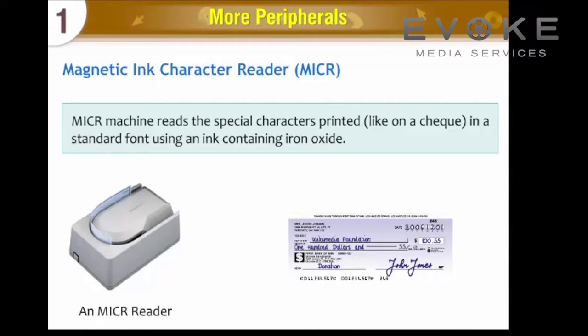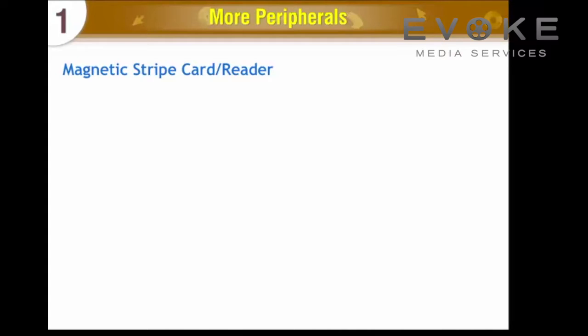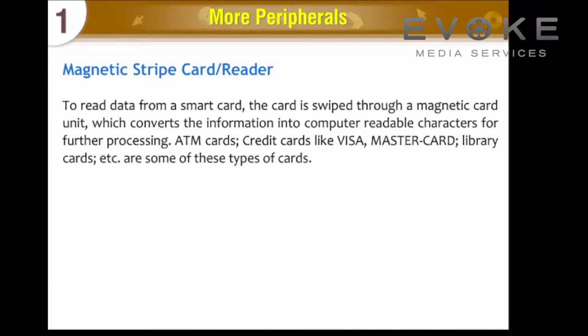Magnetic Stripe Card Reader: To read data from a smart card, the card is swiped through a magnetic card unit, which converts the information into computer-readable characters for further processing. ATM cards, credit cards like Visa, MasterCard, library cards, etc. are some of these types of cards.